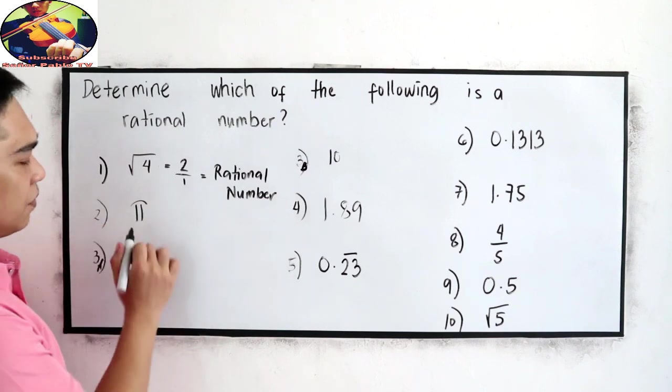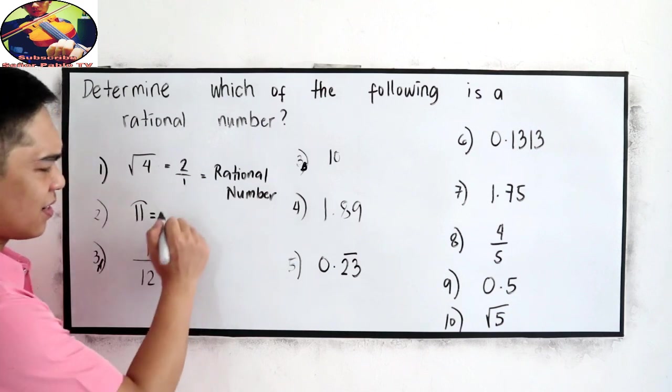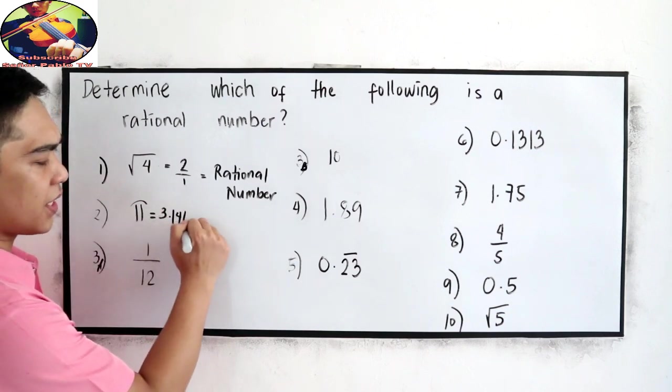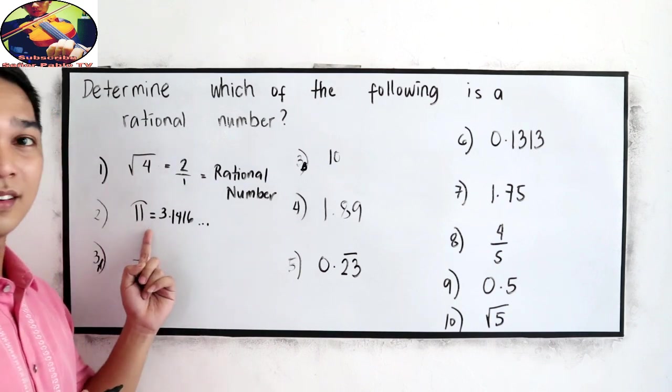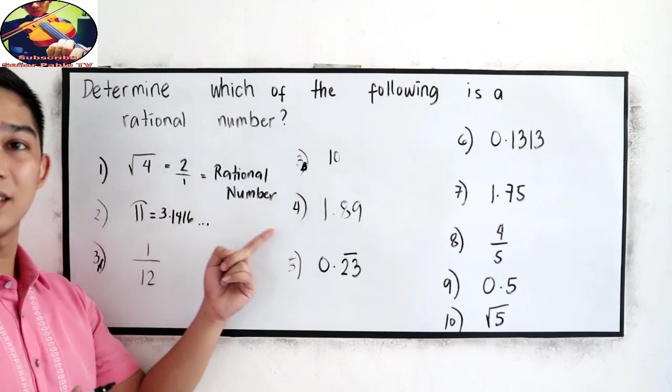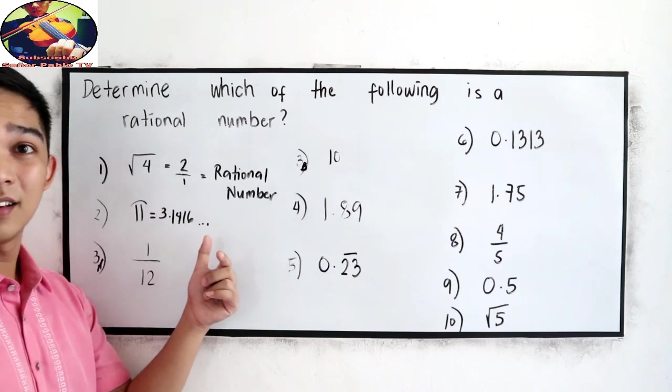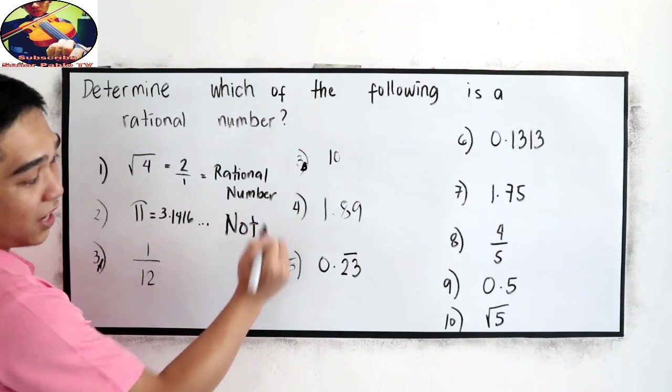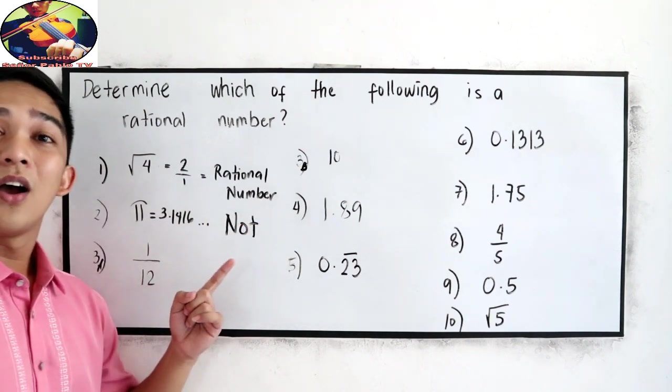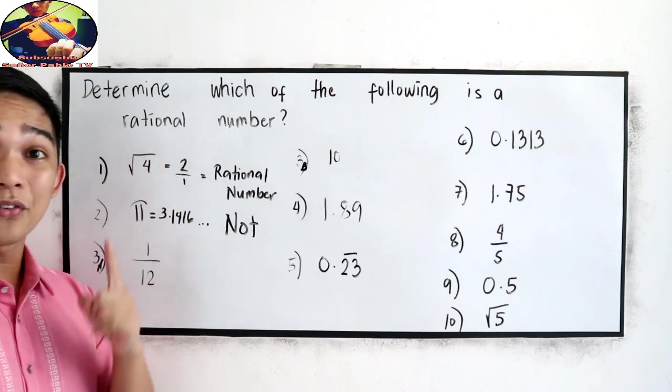Number 2, pi. The value of pi is 3.14, 16, and so on. Now, we know that pi has infinite place for the decimal. So, this is not a rational number because we cannot write it in a over b form.